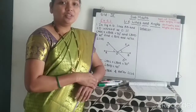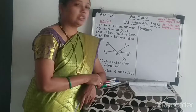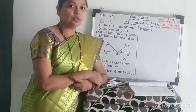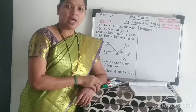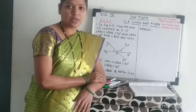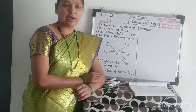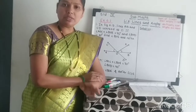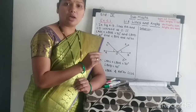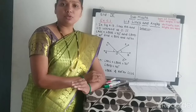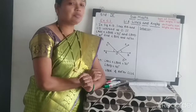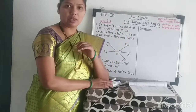Good morning students. Today we are going to proceed with lesson number 6 on lines and angles. In the earlier session we studied the basic concepts of lines and angles. We saw that lines which intersect are called intersecting lines, and lines which never meet are called parallel lines. We also covered angles and their types.